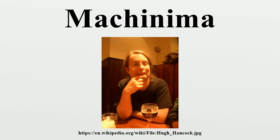Machinima can be filmed by relying on in-game artificial intelligence or by controlling characters and cameras through digital puppetry. Scenes can be precisely scripted and can be manipulated during post-production using video editing techniques. Editing, custom software, and creative cinematography may address technical limitations.